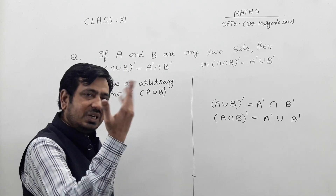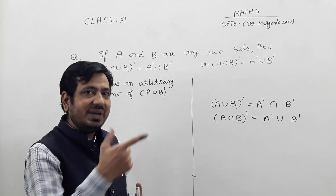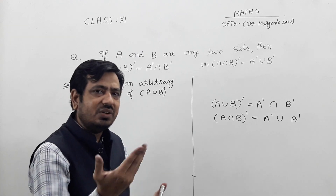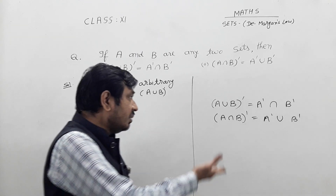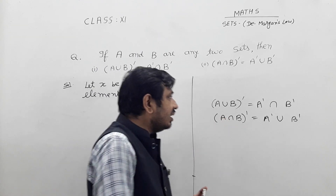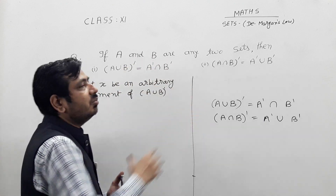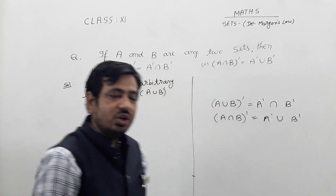In the previous video, we verified this by taking one example of sets A and B. But here, we prove De Morgan's law formally.